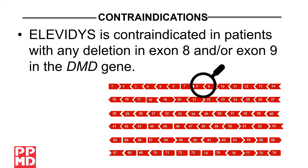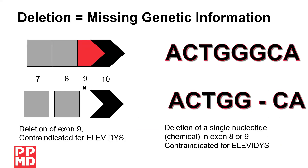Alevitis has a contraindication of any deletion in exon 8 and/or exon 9 in the DMD gene. A deletion is missing genetic information. This can include a deletion of an entire exon, as shown here on the left with a deletion of exon 9, or a deletion of one of the DNA chemicals, as shown here on the right. Another example would be a deletion of exons 8 through 13, as that would also be contraindicated.